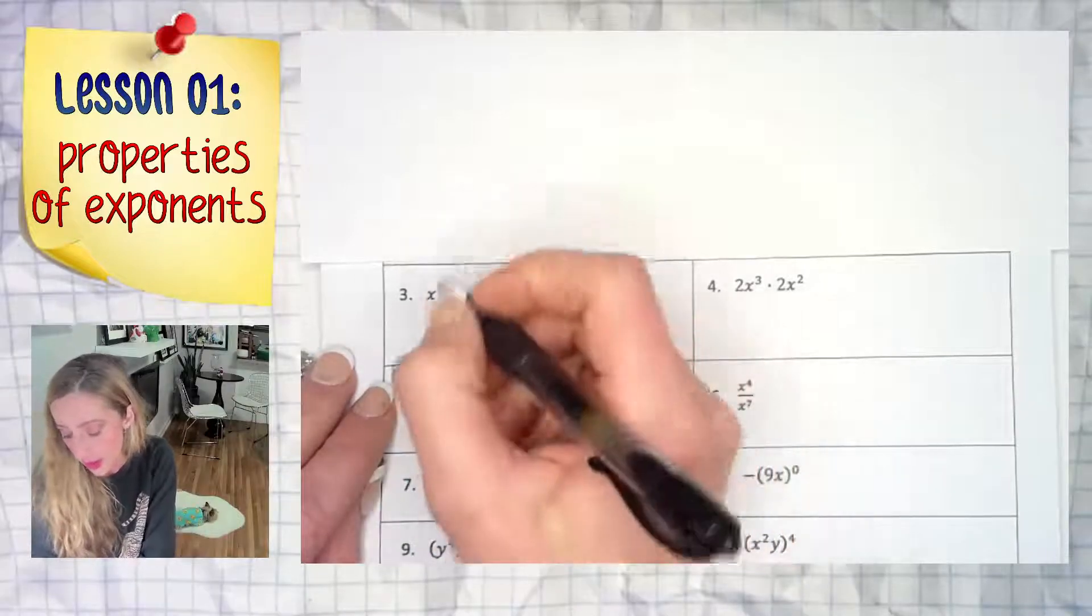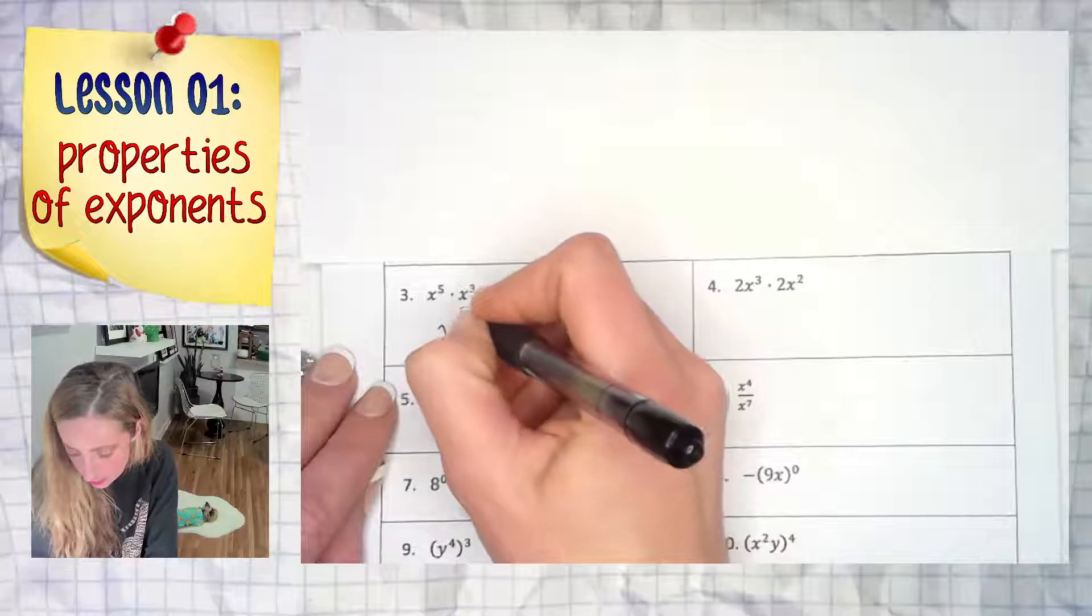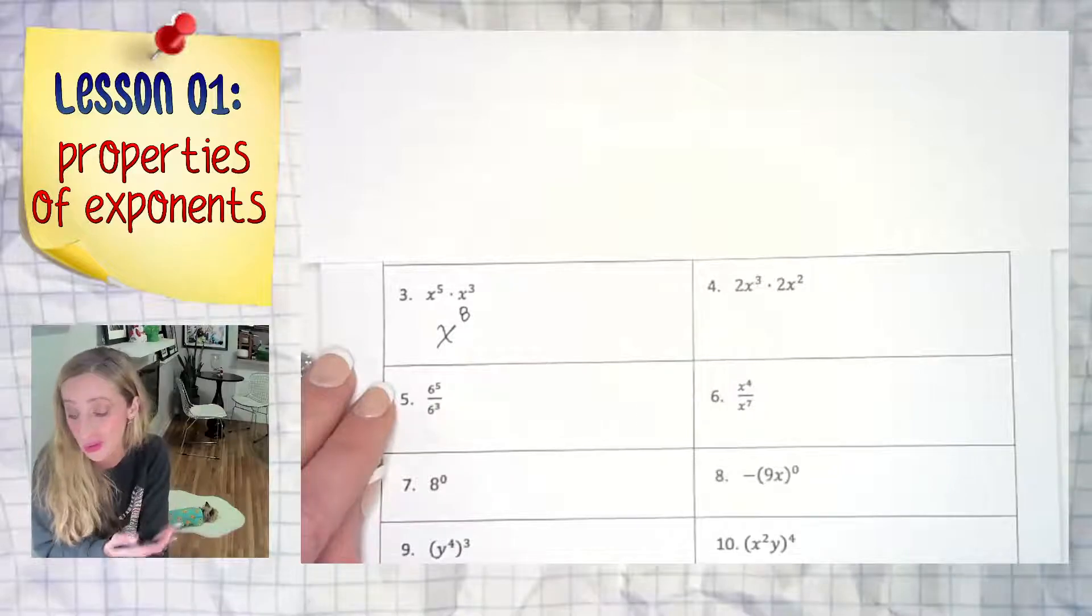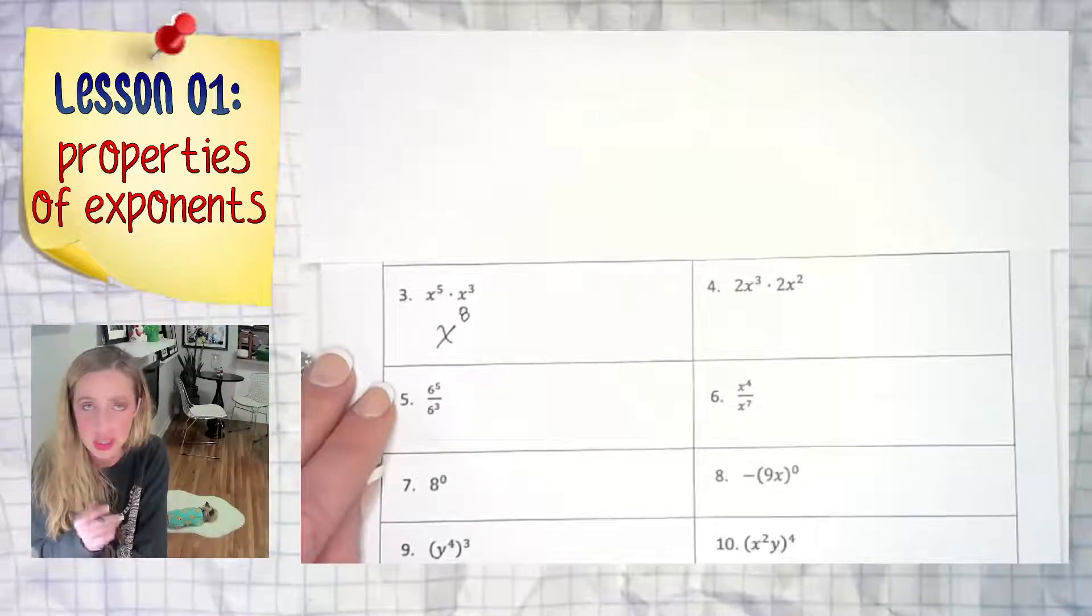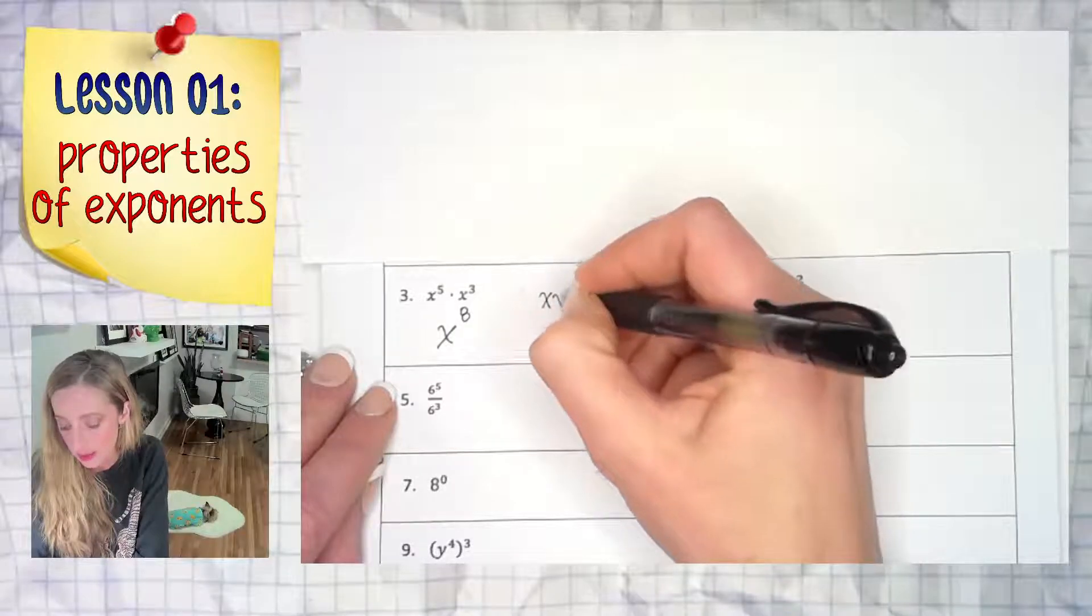So that means we are allowed to simplify quick and easy. What is it? It's just going to be x to the eighth power. You add your exponents. As tempting as it may be to do five times three and write x to the 15th, it's x to the eighth.